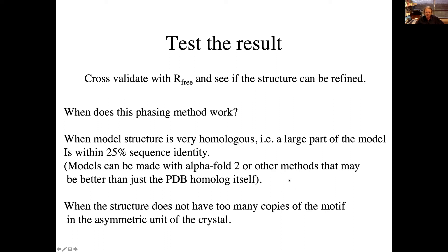Recently there's been considerable discussion about going beyond just using homologs as models, and actually using refined models from prediction methods such as AlphaFold2, which made a fairly famous increase in the quality of models. You can use AlphaFold2 to predict your protein and then use that as a starting model. It looks like you're more likely to solve a molecular replacement problem with these kinds of models rather than using the original homolog directly from the PDB.